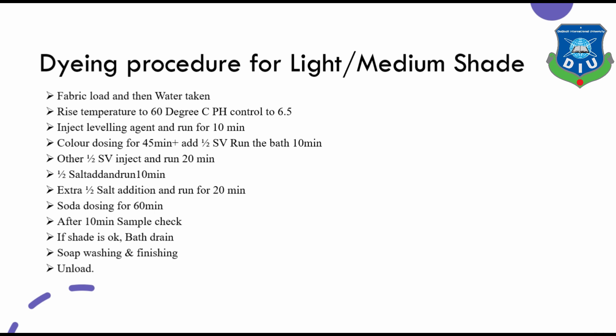For light and medium shade dyeing: fabric load, water filling, raise temperature to 60 degrees centigrade and pH control to 6.5. Inject leveling agent and run for 10 minutes. Color dosing for 45 minutes; add half solvent, run bath 10 minutes, then inject other half and run 20 minutes. Add half salt and run for 10 minutes, then extra half salt addition and run for 20 minutes. Soda dosing for 60 minutes. After 10 minutes, check the sample. If the shade is OK, drain the bath, then soap washing and finishing, then unload.